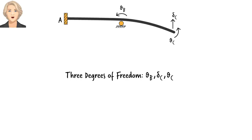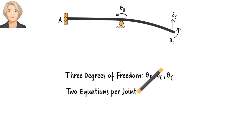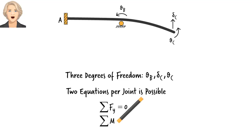Since in this formulation we are only considering bending moment and shear force but not axial force, we can write two equilibrium equations per joint: sum of forces in the y-direction must be zero, and sum of moments at the joint must be zero. The beam has three joints, so we can write up to six equilibrium equations, but we only need three. We use the equations associated with the degrees of freedom of the beam.